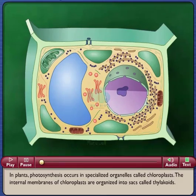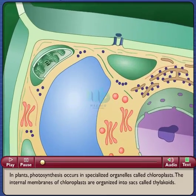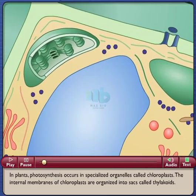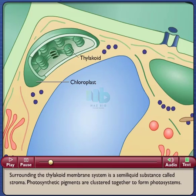In plants, photosynthesis occurs in specialized organelles called chloroplasts. The internal membranes of chloroplasts are organized into sacs called thylakoids. Surrounding the thylakoid membrane system is a semi-liquid substance called stroma.